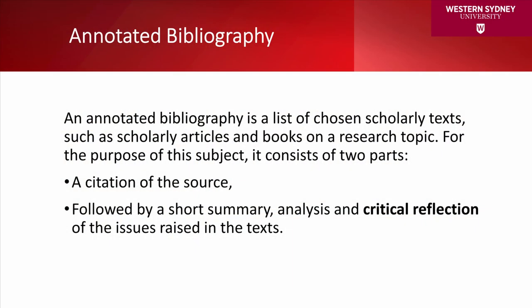An annotated bibliography is a list of chosen scholarly texts, such as scholarly articles and books on a research topic. For the purpose of this subject, it consists of two parts: a citation of the source, followed by a short summary, analysis, and critical reflection of the issues raised in the text.